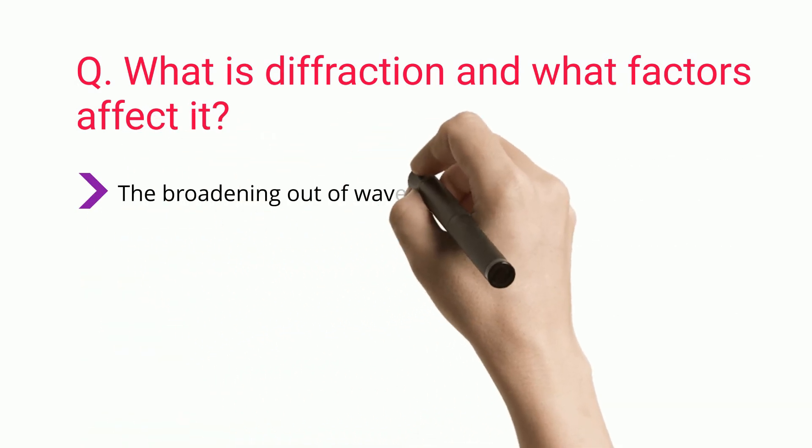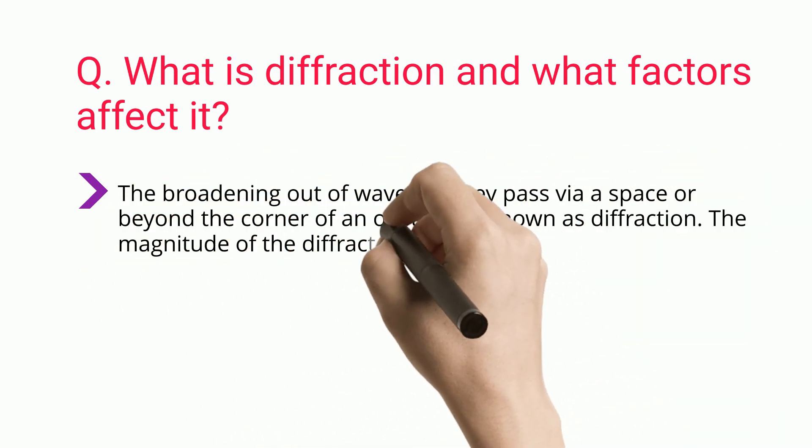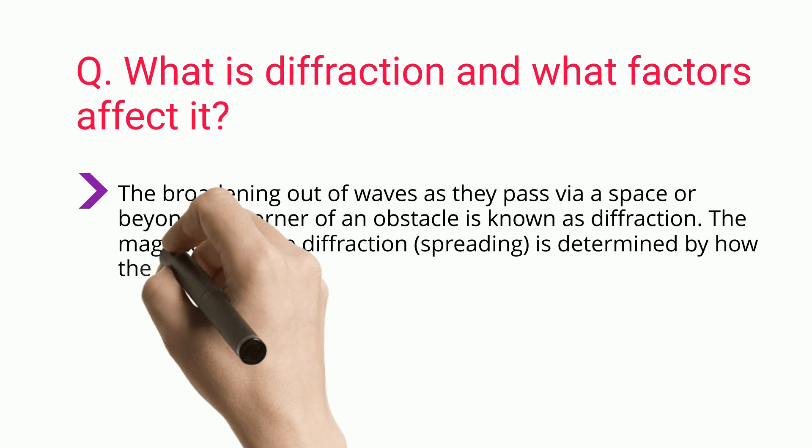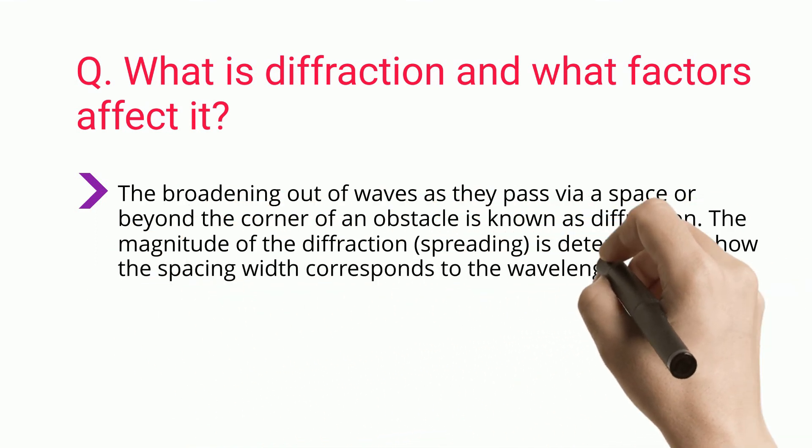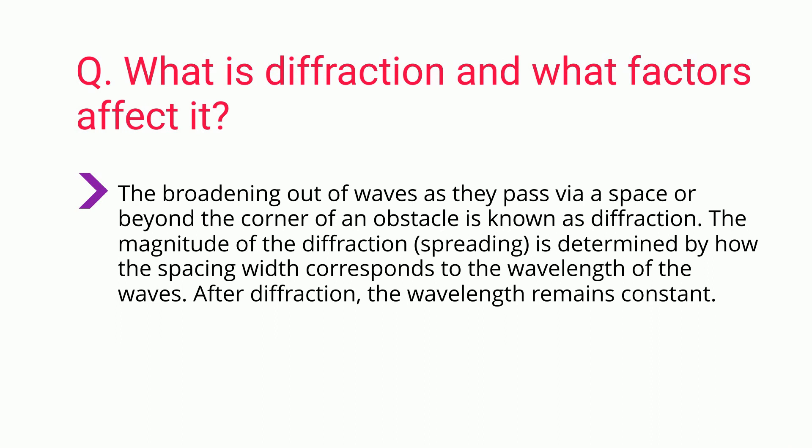The broadening out of waves as they pass via a space or beyond the corner of an obstacle is known as diffraction. The magnitude of the diffraction or spreading is determined by how the spacing width corresponds to the wavelength of the waves. After diffraction, the wavelength remains constant.